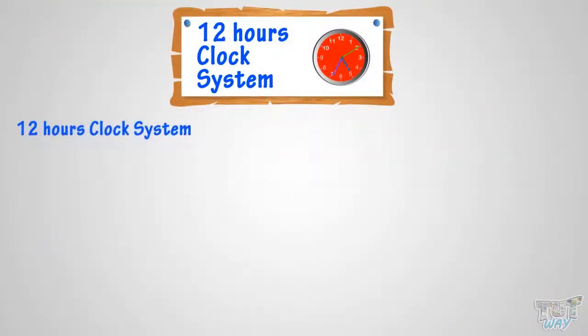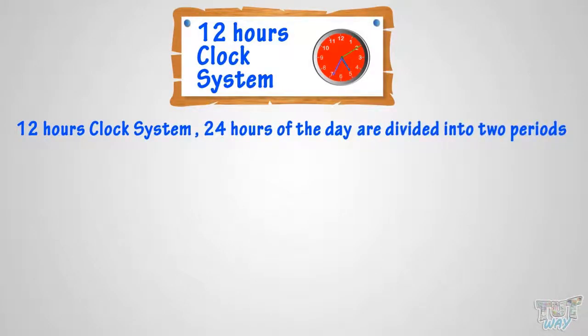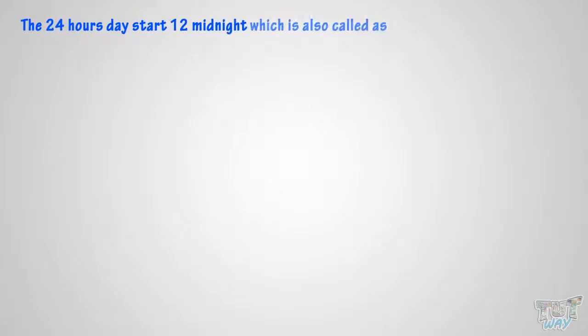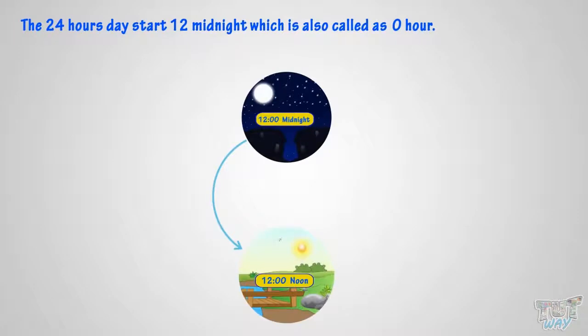Let's try to understand this 12-hour clock system. In the 12-hour clock, the 24 hours of the day are divided into two periods, each consisting of 12 hours. The 24-hour day starts at 12 midnight, which is called 0 hours. The hours from 12 midnight to 12 noon are called a.m. hours, and the hours from 12 noon to 12 midnight are called p.m. hours.